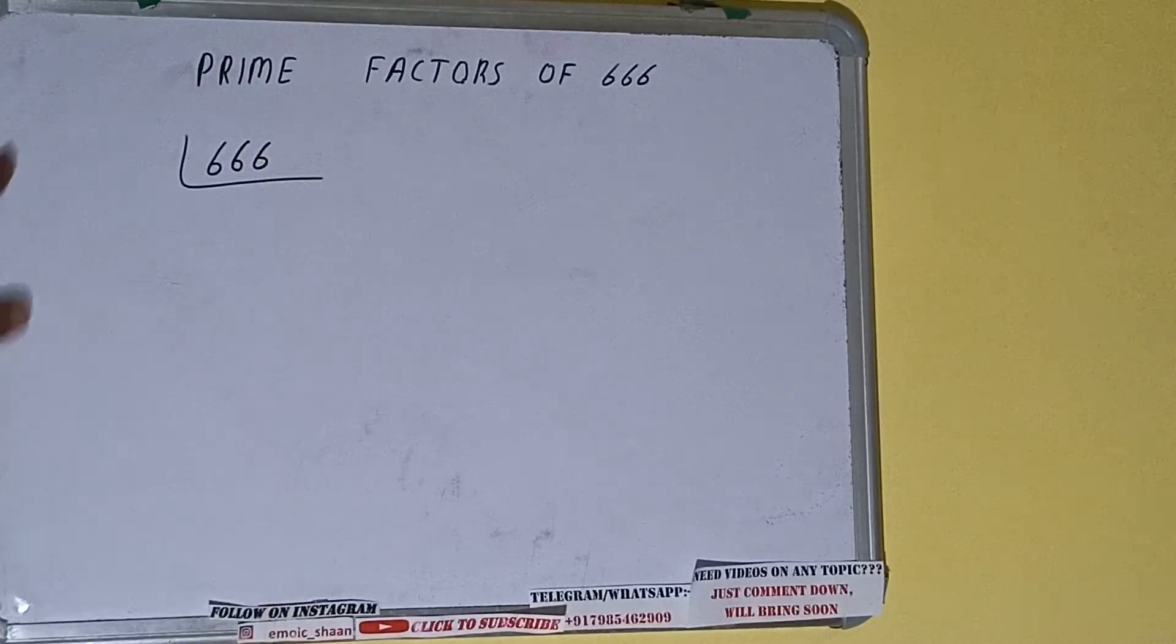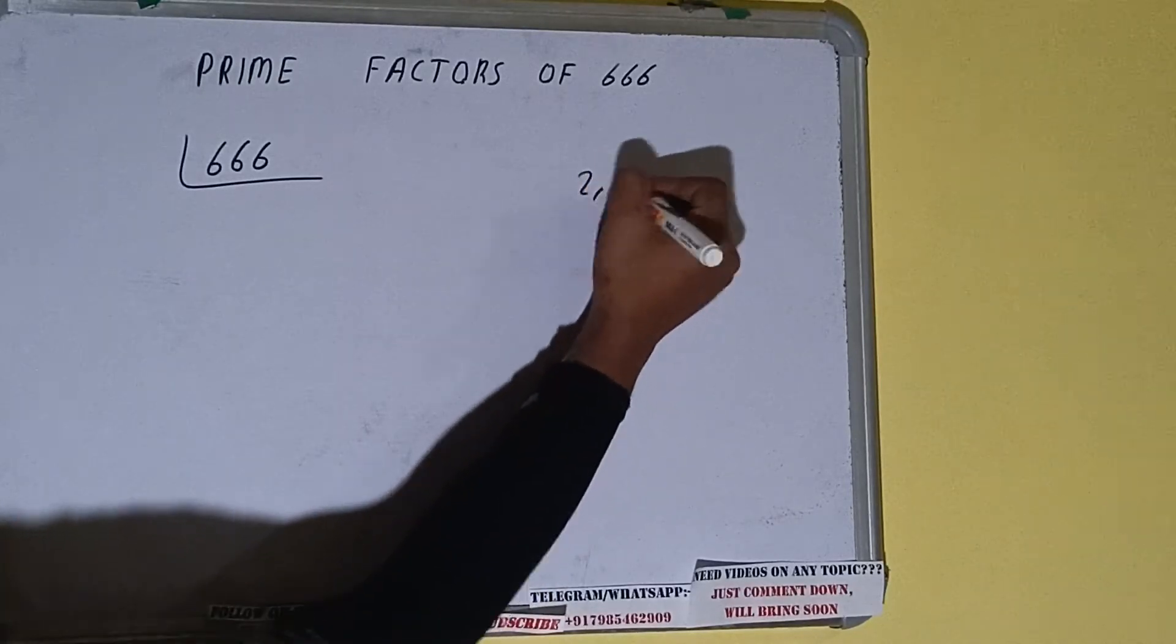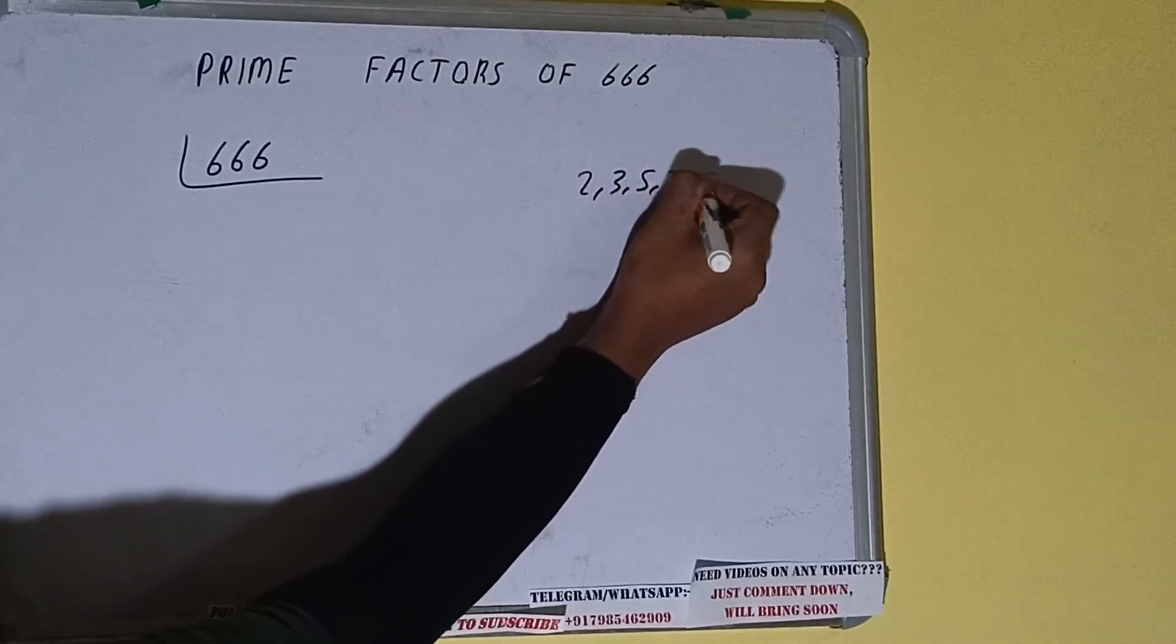The next thing we need to know about is what are prime numbers. So prime numbers are numbers that are divisible by 1 and the number itself like 2, 3, 5, 7 and so on.